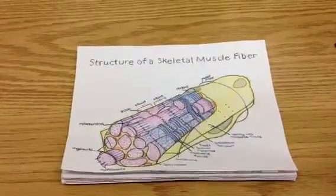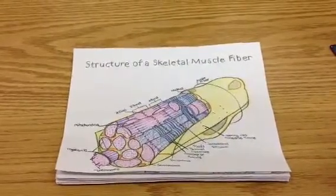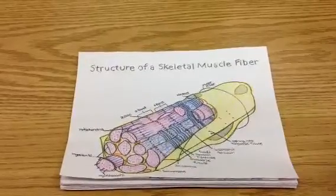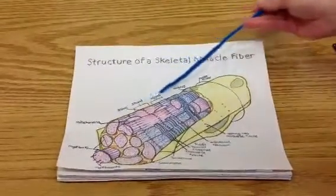A bundle of myofibrils makes up a single muscle cell. Within the myofibril, we have Z-discs, I-bands, and A-bands.